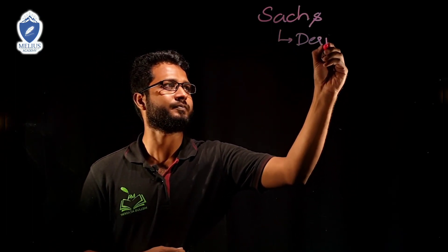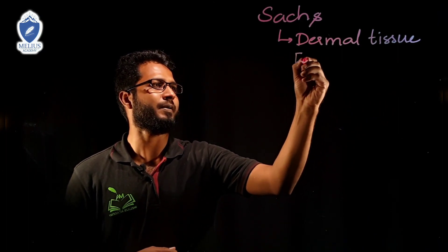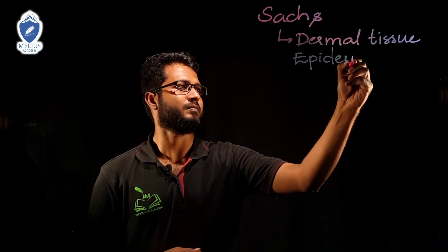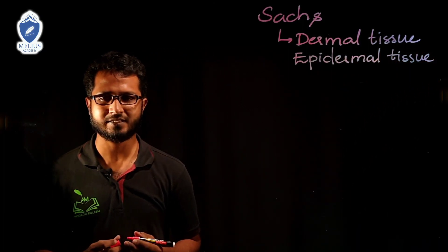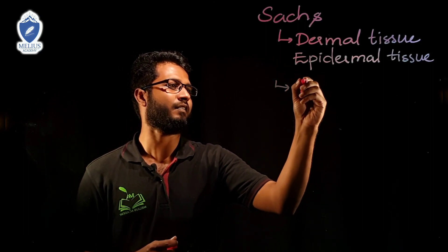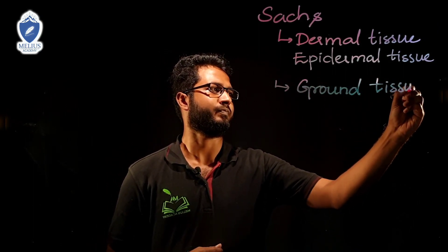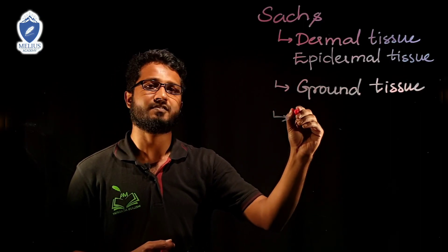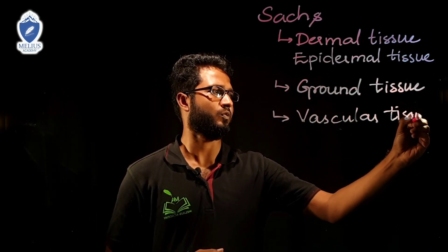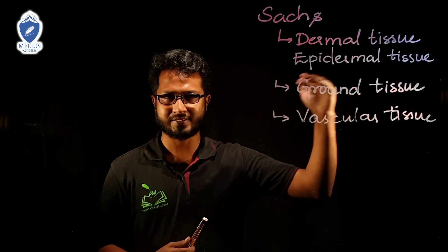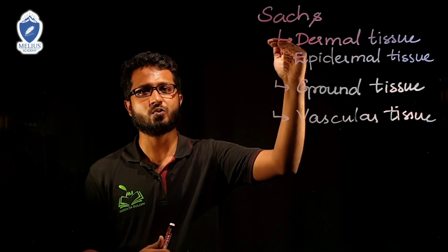The three groups are: one, dermal tissue, which is also known as epidermal tissue; two, ground tissue; and three, vascular tissue. So Mr. Sack is the one who classified tissues into these three groups.